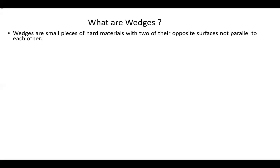Before getting into the actual problems of wedge friction, let us know what these wedges are. Wedges are nothing but small pieces of hard materials with two of their faces not parallel to one another — there will always be an angle between the two faces. The materials can be wood, metals, or sometimes rock.